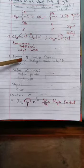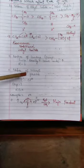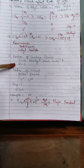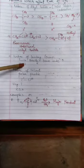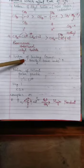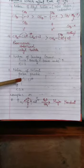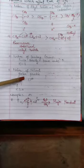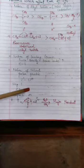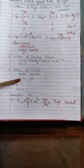Factor two is the nature of the leaving group. For example, R-I: here I⁻ is the leaving group. Factor three is the nature of the solvent — that is polar protic only. Polar protic means the compound carries both negative and positive charge — like carbocation and Cl⁻.